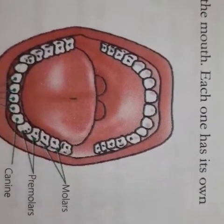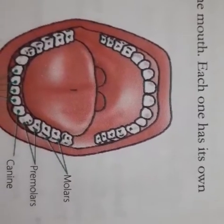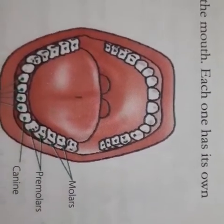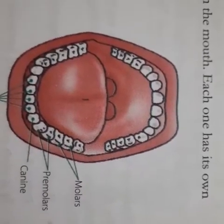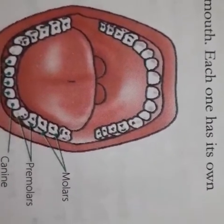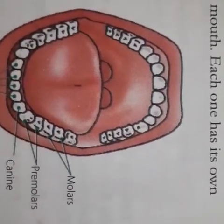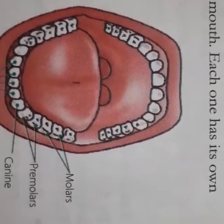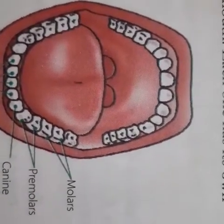We already know that digestion begins in the mouth and the teeth help to break down food into smaller pieces. Now let us understand the structure and the types of teeth. When the baby is about 6 months old, the teeth start appearing.